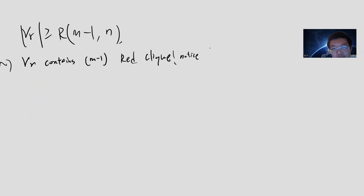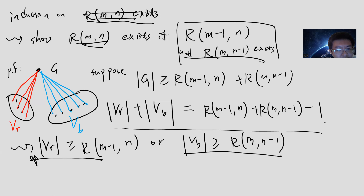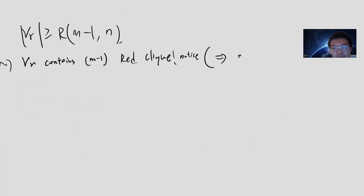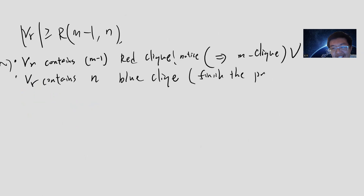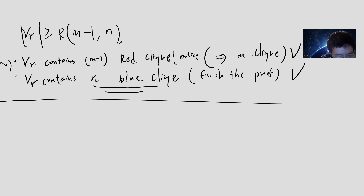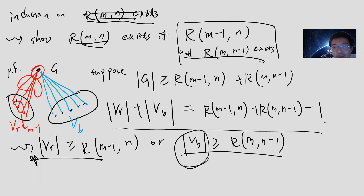This means that by Ramsey theory - by the definition of the Ramsey number - V_R contains an (N-1) red clique. But notice that by our graph construction, if V_R contains a small (N-1) clique, then adding this point gives an N red clique. So then we have an N red clique and we finish the proof. Otherwise, V_R contains an N blue clique, then we finish the proof, because now we've shown it contains an N blue clique.